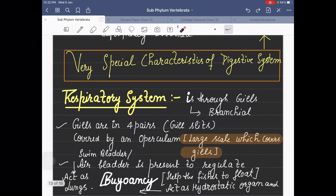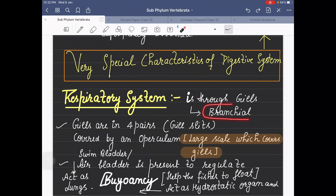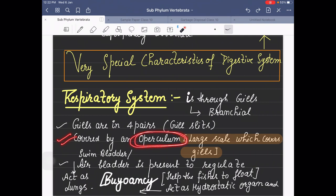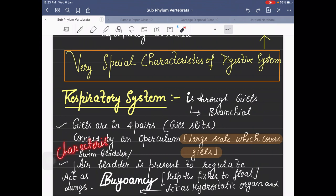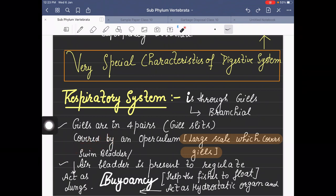For the respiratory system, they respire through gills, which is known as branchial respiration. Here gills are in four pairs. If you recall, in cartilaginous fishes, gills were five to seven pairs. Here gills are covered by operculum, a large scale which covers the gills.